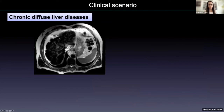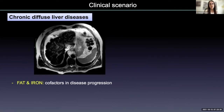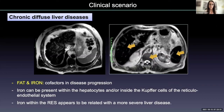Besides primary and secondary hemochromatosis, we can also have hepatic iron overload in patients with different diffuse liver diseases. Curiously, in this scenario, fat frequently coexists with iron and both act as cofactors in disease progression. In these patients, iron can be present only in the hepatocytes, but also in the reticuloendothelial system. This is why in patients with alcoholic hepatitis, viral hepatitis, or NAFLD, we can also recognize iron in the spleen.